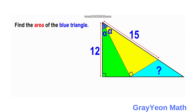Let us start with the green triangle and the yellow triangle. These two triangles are right triangles and are similar because they have the common angle alpha. If one of the angles inside these two triangles is alpha, then the other angle is 90 minus alpha in both cases. Therefore these two triangles are actually similar by angle-angle-angle congruence.